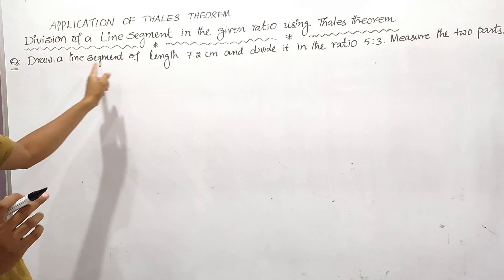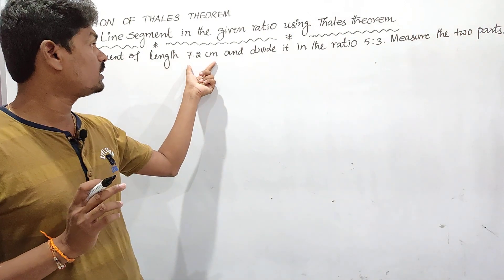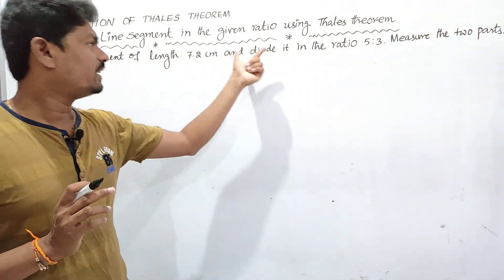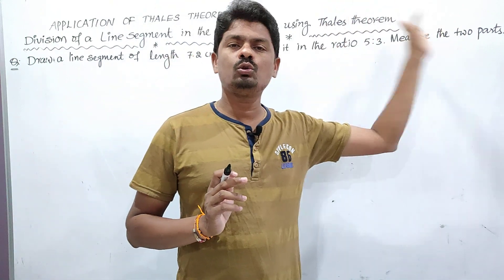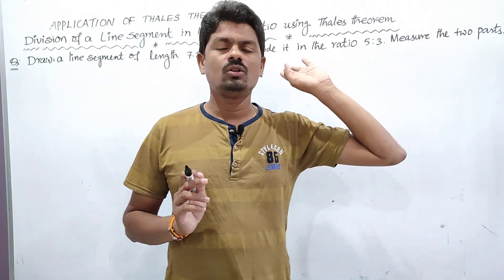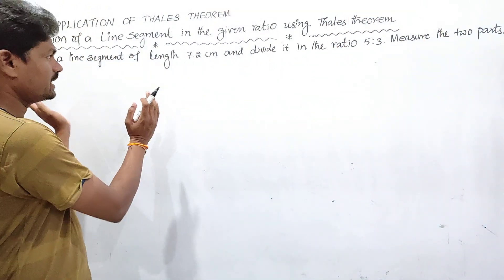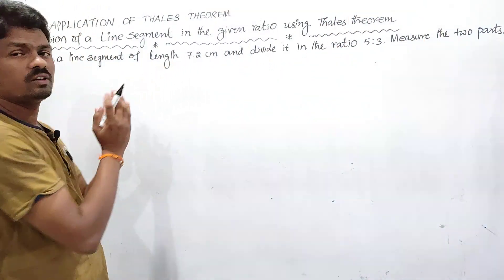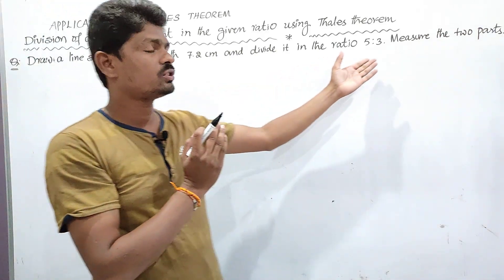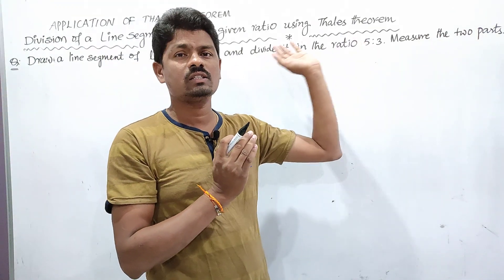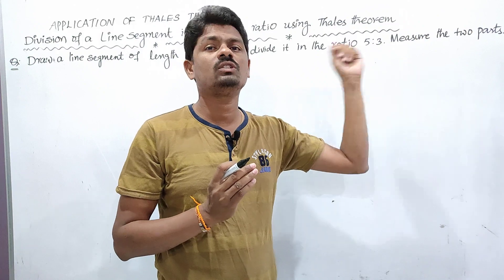The question is: draw a line segment of length 7.2 centimeters and divide it in the ratio 5 is to 3, then measure the two parts. So first we have to draw a line segment of length 7.2 centimeters, then divide it in the ratio 5 is to 3 using Thales theorem, then measure the two parts using the scale.